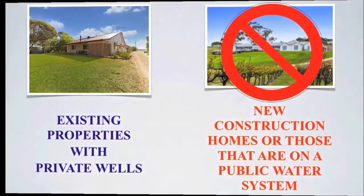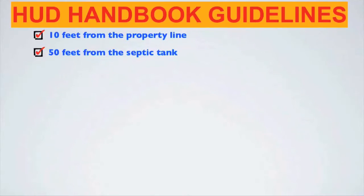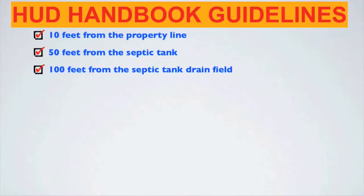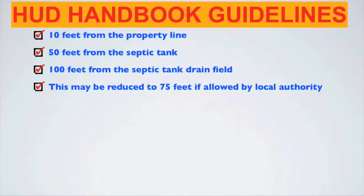HUD handbook guidelines require the following minimum distance requirements between wells and sources of pollution for existing construction: 10 feet from the property line, 50 feet from the septic tank, 100 feet from the septic tank drain field — but this may be reduced to 75 feet if allowed by local authority.